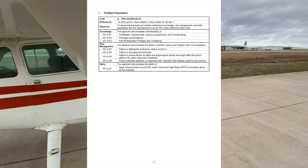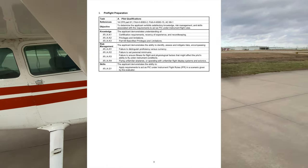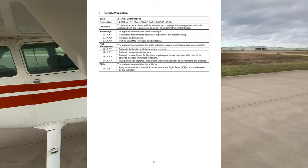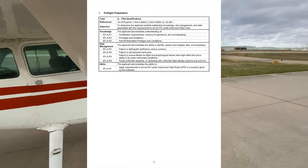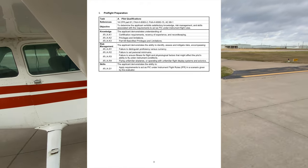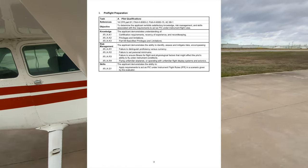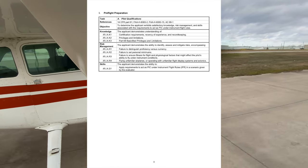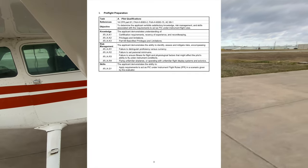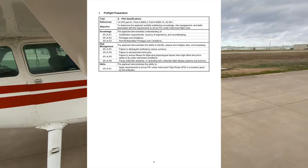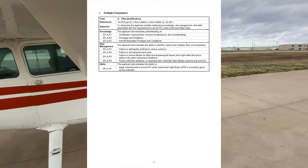Romeo 3 covers proficiency versus currency. Proficient means you're capable of conducting a task with a high degree of competence, while currency means you have performed the minimum FAA requirements within the allotted time frame to carry out a specific set of duties. Your examiner is probably going to ask you about this and give you a scenario — you must explain that proficiency is very important.